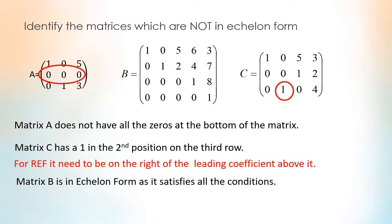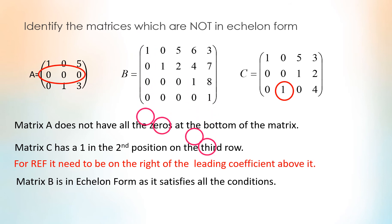That is, the first non-zero leading entry is 1, and the leading entry on the next row is to the right of the 1 in the previous row. There are zeros below the leading entry 1.